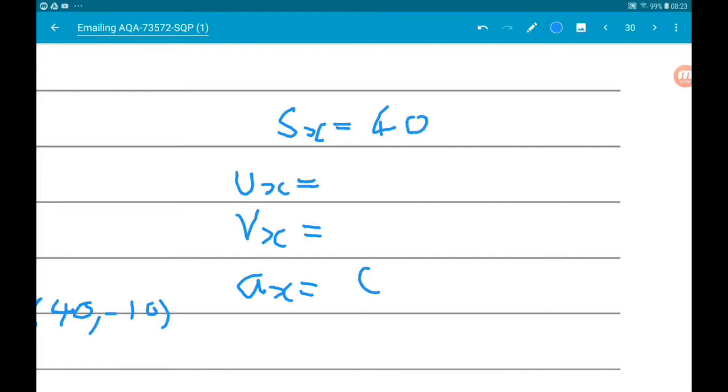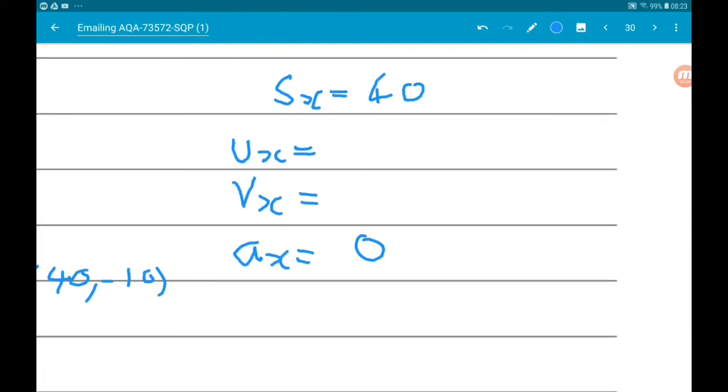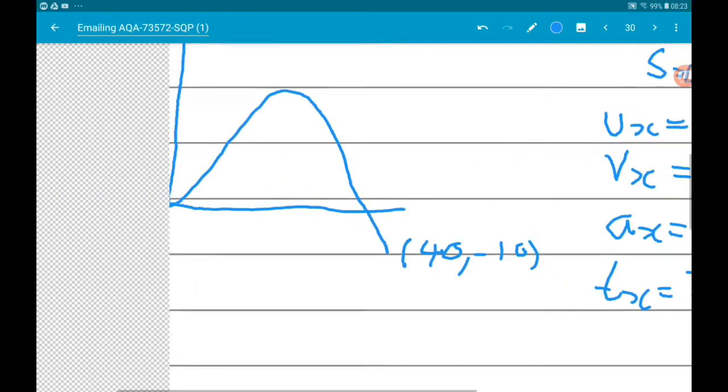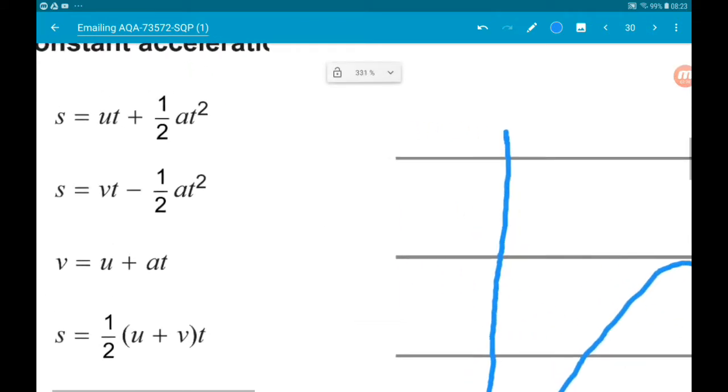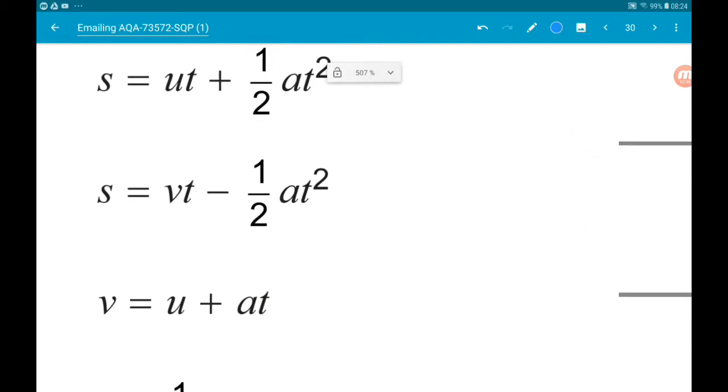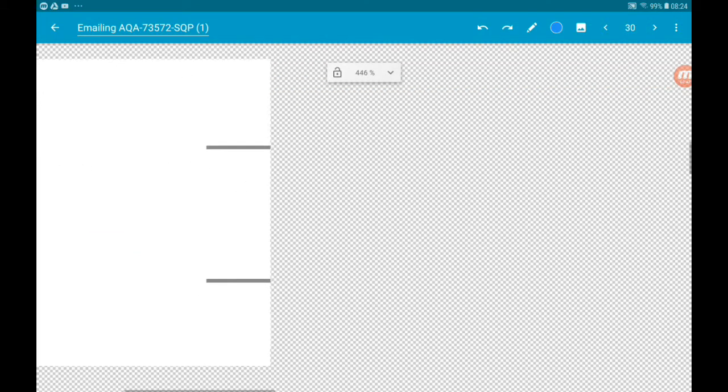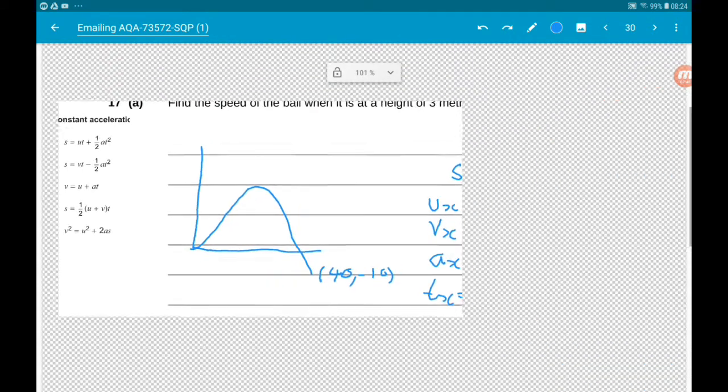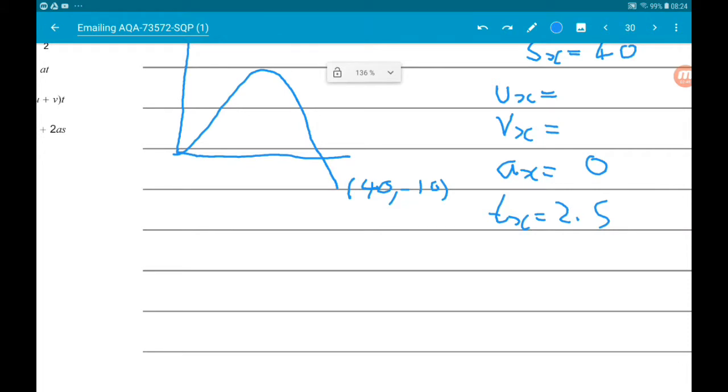We know that the displacement in x is 40. We don't know the initial velocity in x or the final velocity in x. And we know that time is 2.5 seconds. From that, what can we work out? We've got s, a, and t, so that actually allows us to work out the initial speed.